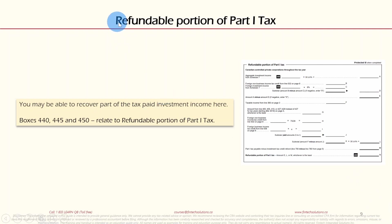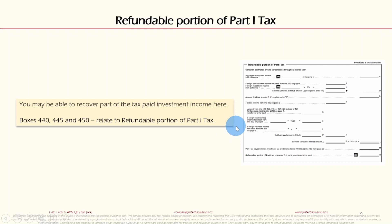Section 7 is the Refundable Portion of Part One Tax. You may be able to recover part of the tax paid on investment income here. Boxes 440, 445, and 450 relate to refundable portion of Part One Tax. If you are a CCPC throughout the tax year, all your calculations will be shown in this area.